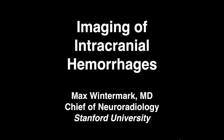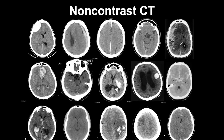Hello, my name is Max Wintermark. I'm the Chief of Neuroradiology at Stanford, and today we're going to review together the typical imaging associated with intracranial hemorrhages. On this first slide, you can see 15 different head CTs, each demonstrating one particular type of intracranial hemorrhage. The pattern is different, and that's going to be the key. With a little bit of clinical history combined with the appearance and distribution of the intracranial hemorrhage, it's usually possible to assign a relatively specific cause.